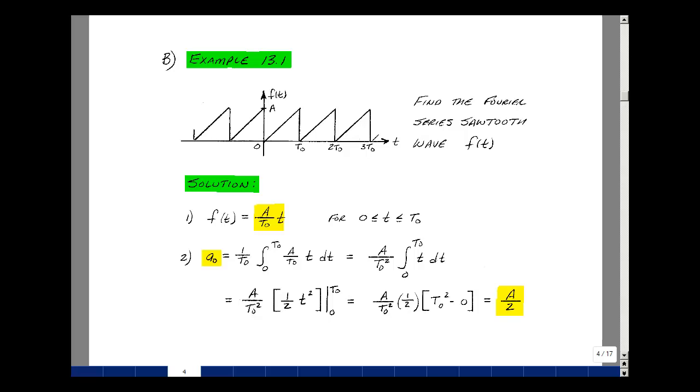a0 from our last video is 1 over the period, integral over a period. Our period now will be from 0 to t0. 1 over t0, integral of our function a over t0 times t dt. a and t0 are not a function of time, so you just bring that out in front.